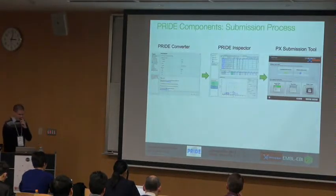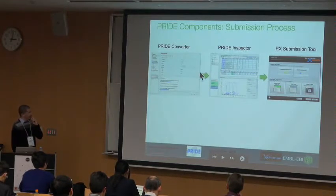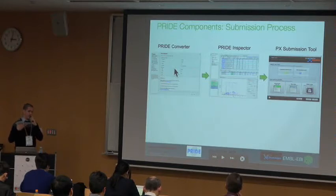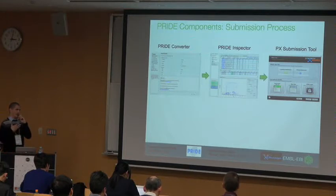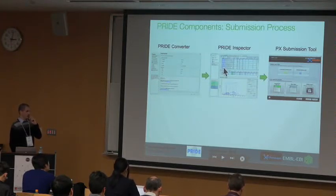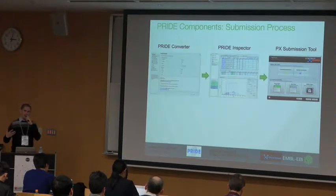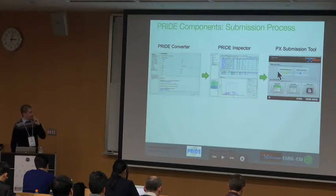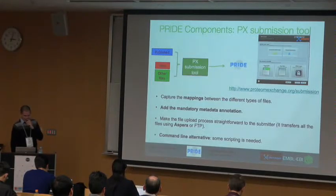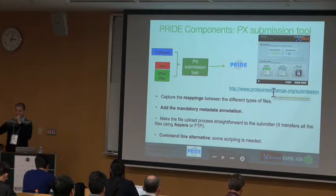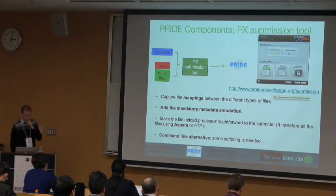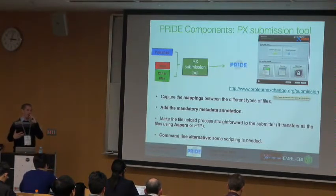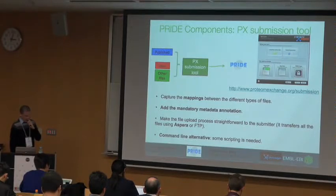The components of the submission process are based on three tools. First, the PRIDE-Converter: if a search engine gives you results not supporting mzIdentML or PSI standards, you convert them using PRIDE-Converter. Then there is PRIDE-Inspector, used to visualize and measure the quality of the experiment. And there is the PX Submission Tool, which submits the data to PRIDE. It captures the relationships between files the researcher is providing, and it is mandatory to provide metadata for each experiment, including publication and tissue. A major step is that the upload process is automatically handled via Aspera, making data upload really fast.